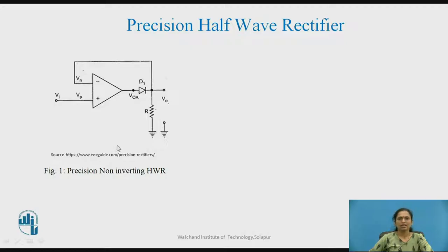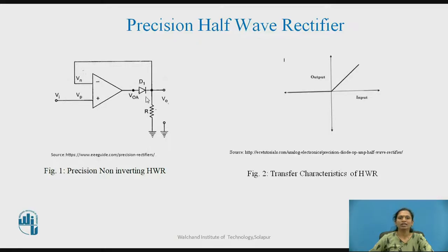The figure shows the circuit diagram for a precision half wave rectifier, where the diode is connected in the feedback path and the signal is applied to the non-inverting input of the op-amp — so it is called a non-inverting half wave rectifier. When the input voltage is greater than 0, that is the positive half cycle, diode D1 conducts and acts as a short circuit. As the input signal increases, the output signal also increases, giving us the transfer characteristics of the half wave rectifier.